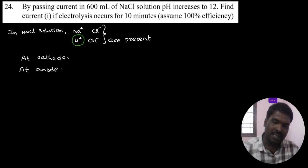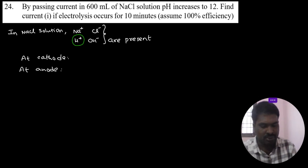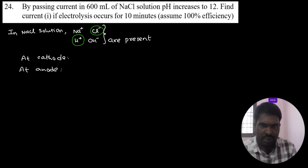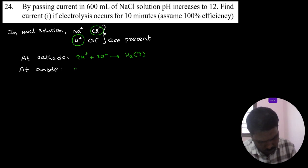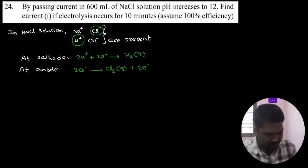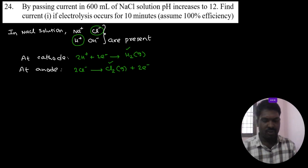Among the anions Cl⁻ and OH⁻, Cl⁻ is preferably involved because its discharge potential is less compared to OH⁻. Cations react at the cathode; anions react at the anode. So: 2H⁺ + 2e⁻ → H₂ gas at cathode, and 2Cl⁻ → Cl₂ gas + 2e⁻ at anode.